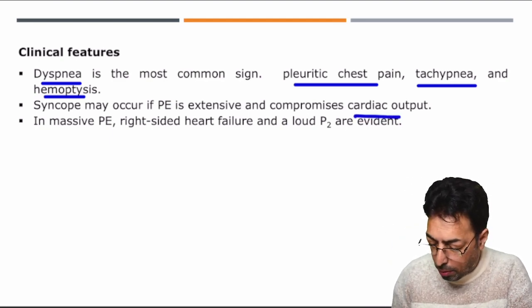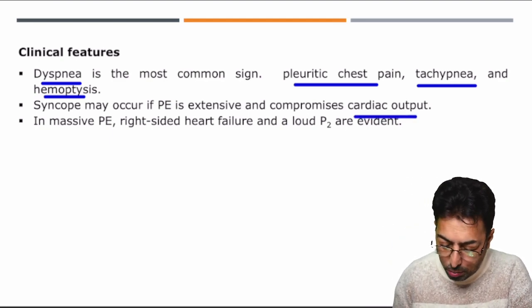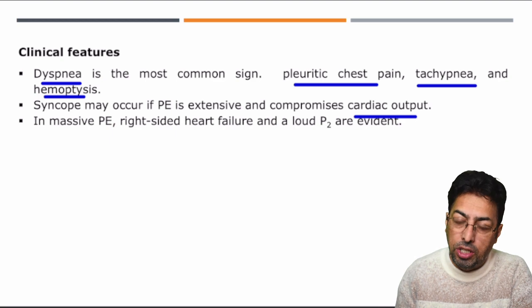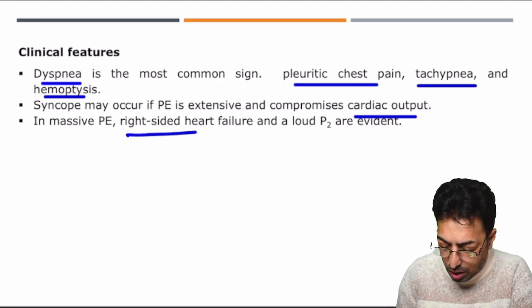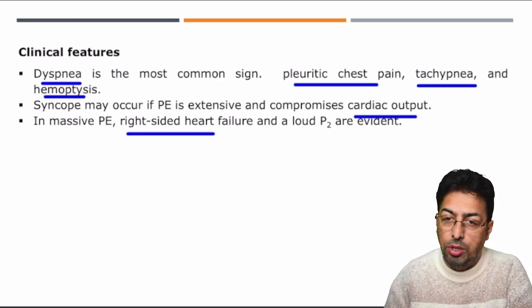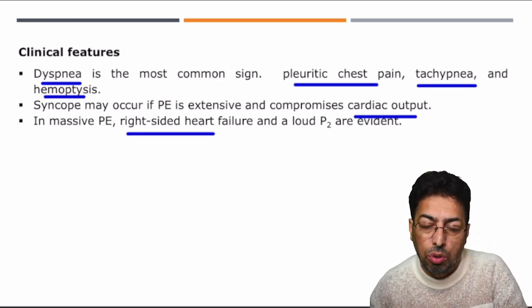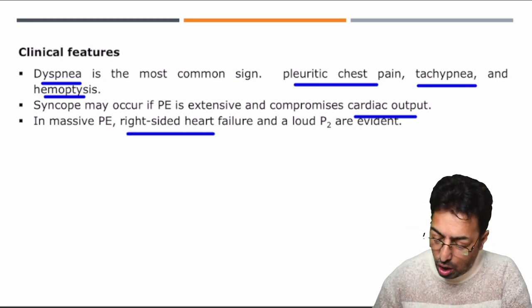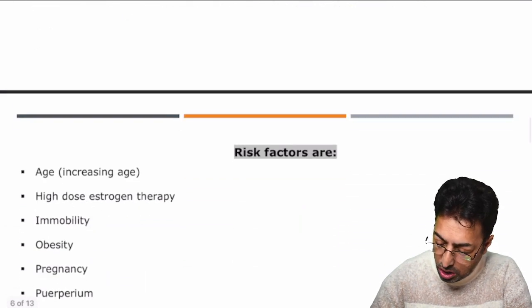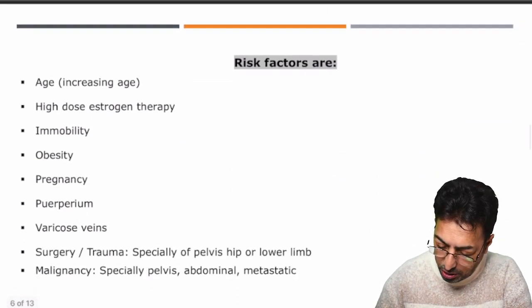Dyspnea is a very common symptom, pleuritic chest pain, tachypnea, tachycardia, and sometimes hemoptysis. There can be variation in symptomatology — hemoptysis with pleuritic chest pain and tachycardia can be another alternative clinical scenario. There is a compromise of cardiac output, and right heart failure can ensue in severe cases.